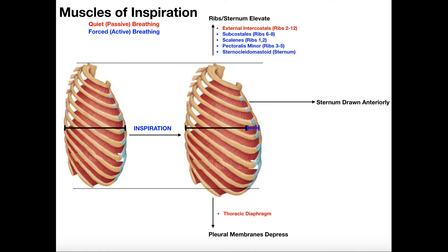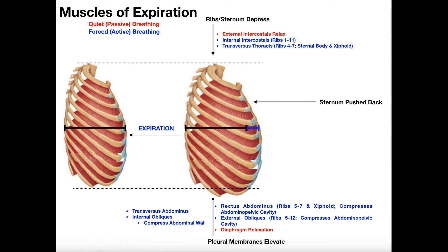For quiet inspiration, all that we require is contraction of the thoracic diaphragm and contraction of the external intercostal muscles. When we have quiet expiration — just regular breathing out whenever you're sitting on the couch — all you have to do is relax the diaphragm and relax the external intercostals. There is no need for any other muscles, and during quiet expiration, actually no muscles contract at all.